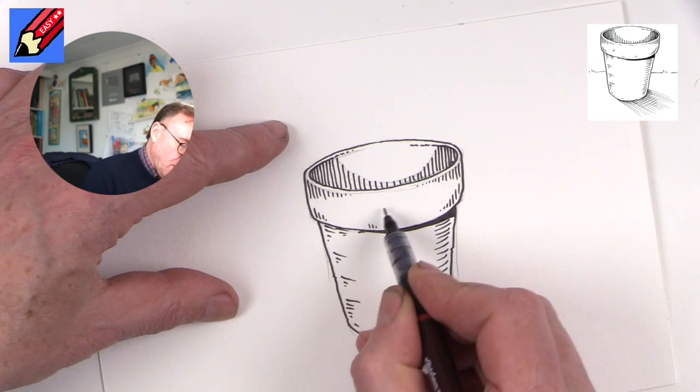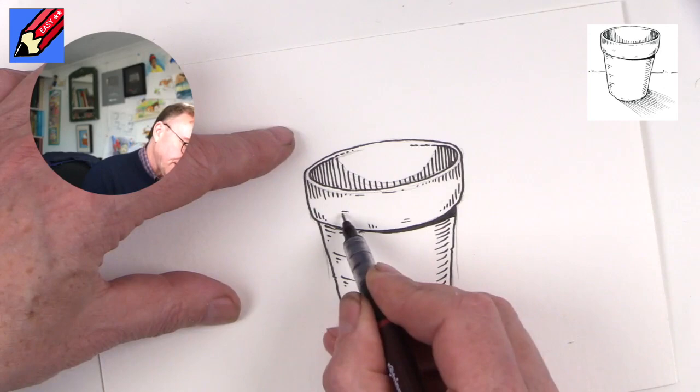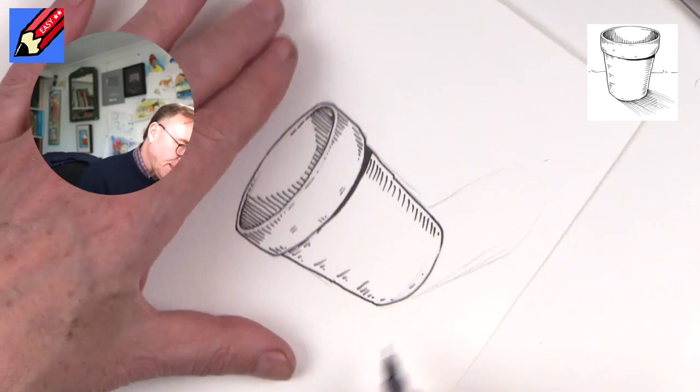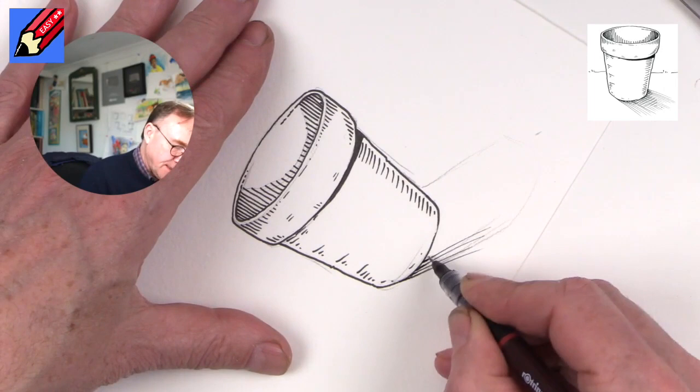Now the shadow is going to be sort of coming out this way slightly at an angle, so I'm going to turn the paper around a little bit like that. And I'm going to flick these lines out like that, so you get a thick part at the front of the line and thin at the end where it's flicked.